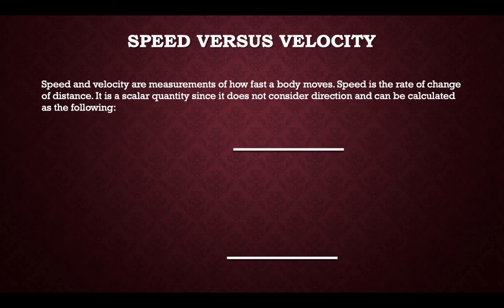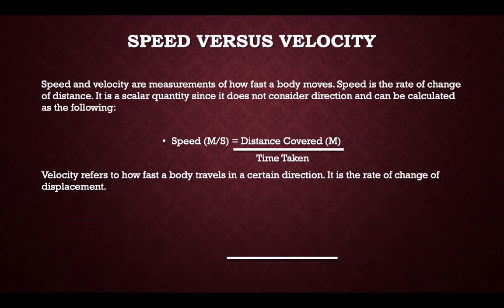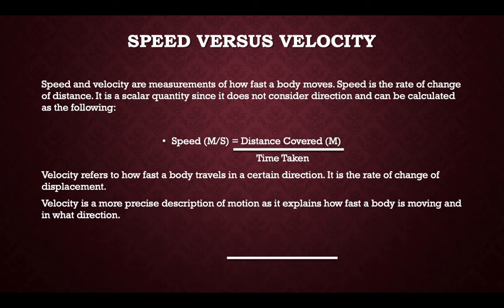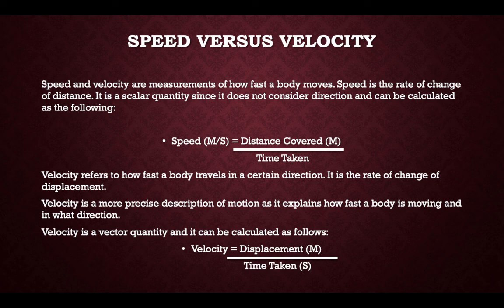Speed versus velocity. Speed and velocity are measurements of how fast a body moves. Speed is the rate of change of distance — it is a scalar quantity since it does not consider direction — and is calculated as: speed equals distance covered divided by time taken. Velocity refers to how fast the body travels in a certain direction; it is the rate of change of displacement and is calculated as: velocity equals displacement divided by time taken.